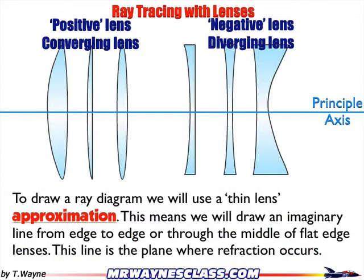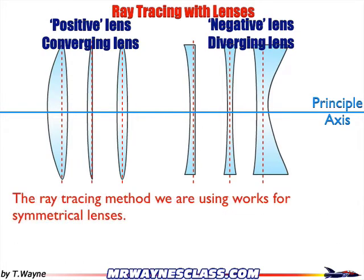Remember, this is an approximation. Our lenses are all going to be symmetrical, and they're going to be thin — that's why it's called a thin lens approximation. In order to complete our approximation, we need a line of refraction, which is the line where the light bends. It actually bends at the surface of the lens, but with our thin lens approximation, it's going to bend right at the line of refraction — the red dotted line drawn right in the middle of our lens. This method works for symmetrical, thin lenses.